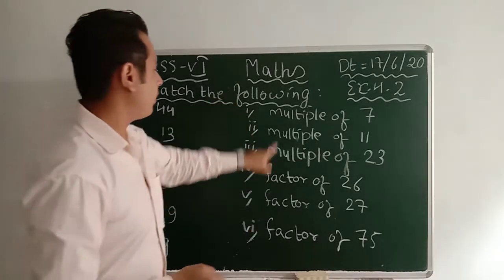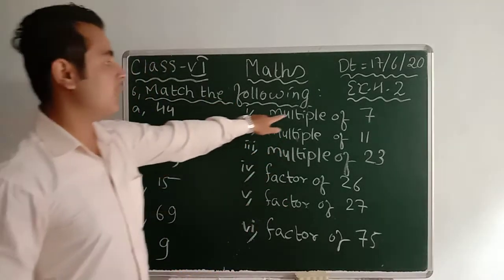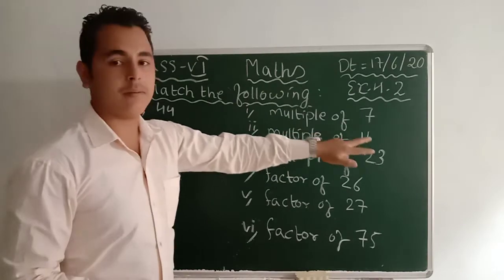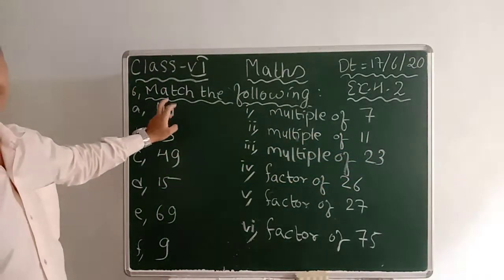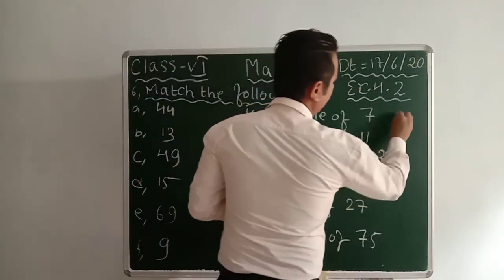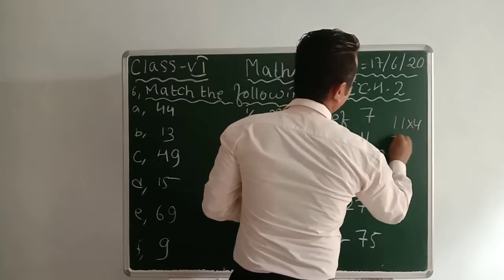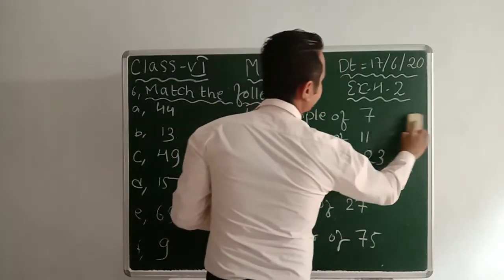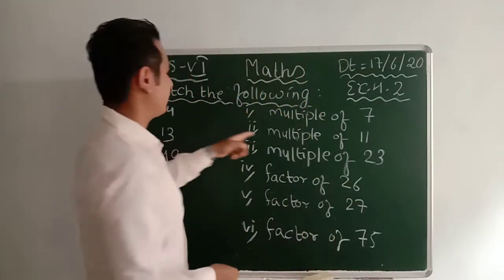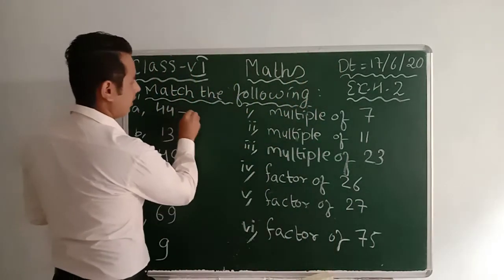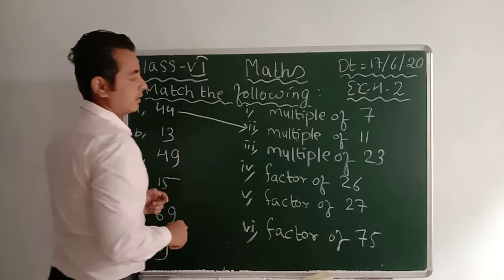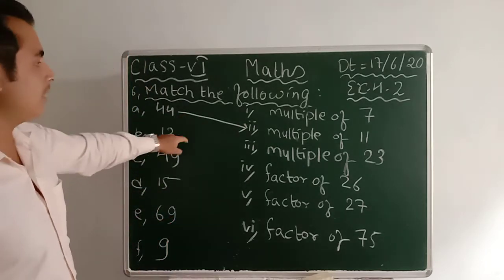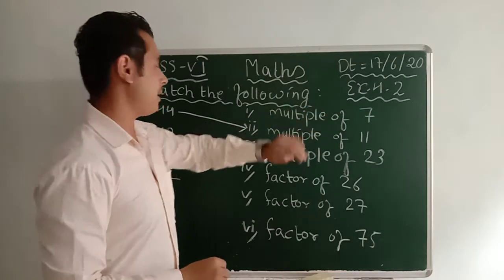First, let's look at 44. Is it a multiple of 7? No. Is it a multiple of 11? Yes — because 11 times 4 gives you 44. That is why 44 matches with 'multiple of 11.' Done.